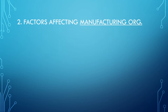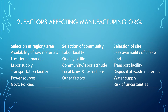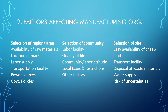For factors affecting the manufacturing organization, there are three levels of selection: selection of the region or area, selection of the community, and selection of the site. For selection of the region, there must be viability of raw materials, location of the market, labor supply, transportation facilities, power sources, and government policy. For the community, considerations include labor facility, quality of life, community and labor attitude, local taxes and restrictions, and other factors. For the site, factors include availability of cheap land, transportation, waste disposal, water supply, and risk of uncertainties.